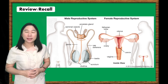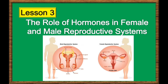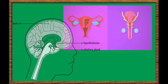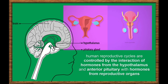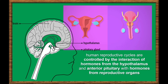Lesson 3: The Role of Hormones in Female and Male Reproductive Systems. The human female and male reproductive cycles are controlled by the interaction of hormones from the hypothalamus and anterior pituitary, with hormones from reproductive tissues and organs.